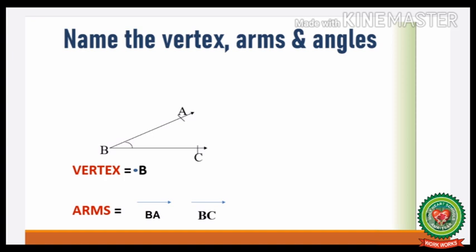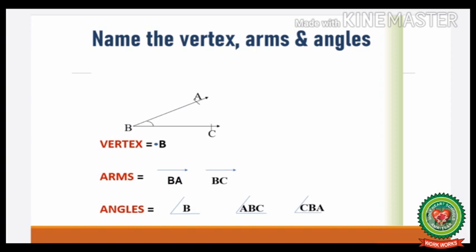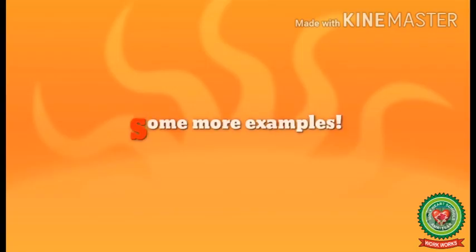Now let us identify the names of the angles formed in this figure. The two rays are meeting at point B, so angle B. Another name for angle B is angle ABC. Remember kids, when we are naming the angle, we must write the vertex at the center. Another name for angle B will be angle CBA — again, the vertex is at the center.